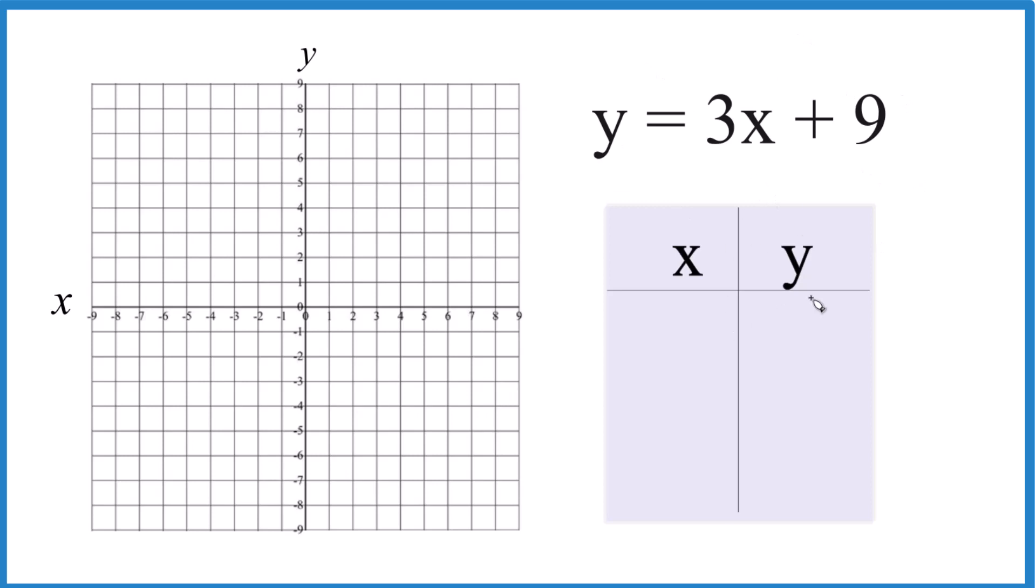So first off, let's do this table of values here for y equals 3x plus 9. If I put 0 in here, 3 times 0, that's 0. 0 plus 9, that's 9.